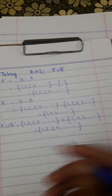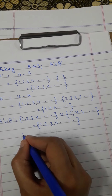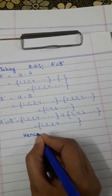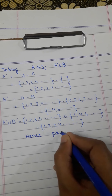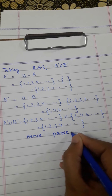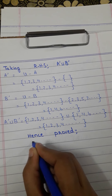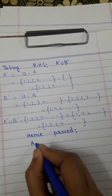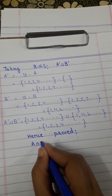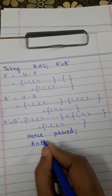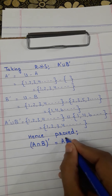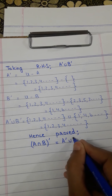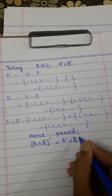Hence proved. The second De Morgan Law has also been proved: (A∩B)' = A'∪B'.